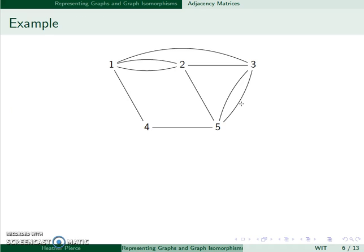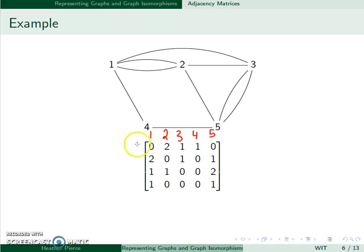For example, here's a graph with five vertices. Every column will correspond to a vertex, and every row will. One, two, three, four, and we're actually missing row five here.